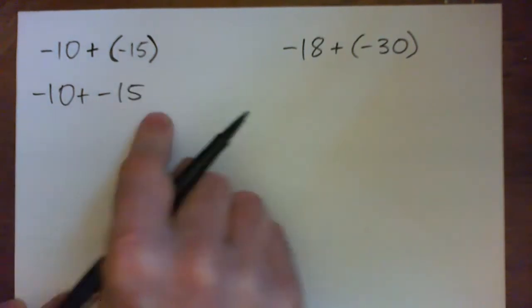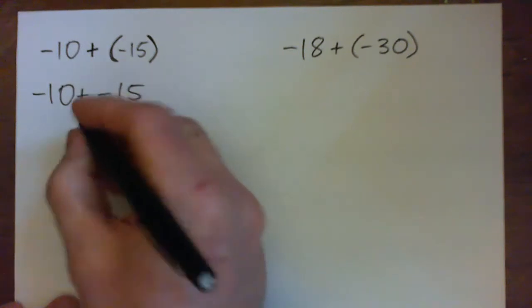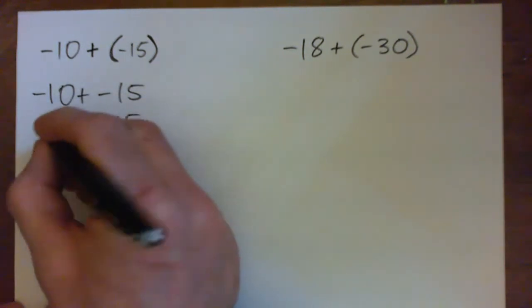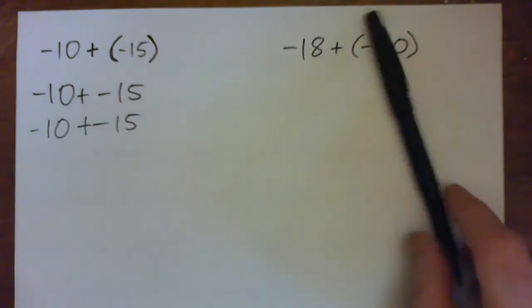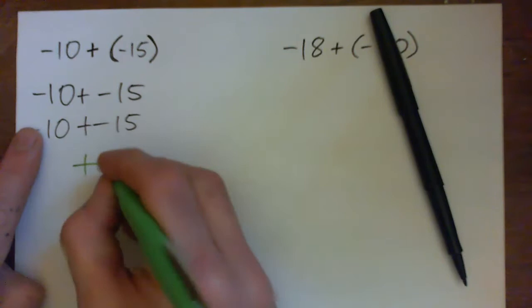Now this is still correct. There's nothing wrong with this. It's just that what if by accident we went plus minus 15, right? And this kind of plus minus looks like just a big long plus.